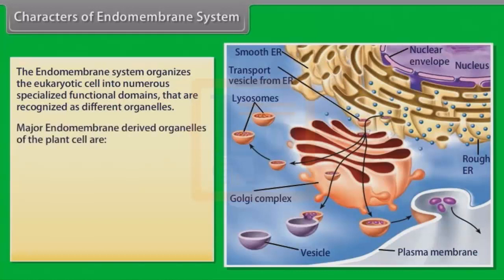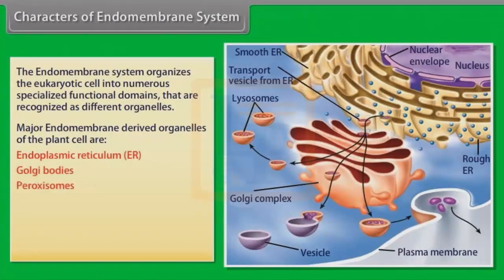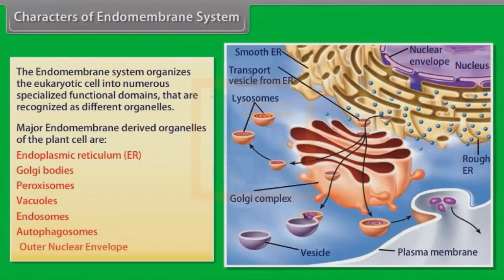The endomembrane-derived organelles of the plant cell are endoplasmic reticulum, Golgi bodies, peroxisomes, vacuoles, endosomes, autophagosomes, and outer nuclear envelope.